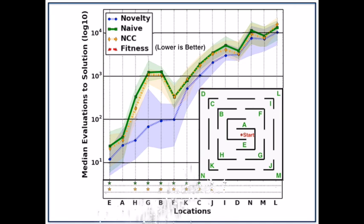As we saw previously, the stars at the bottom of the plot indicate significant difference and in this case show that novelty search is significantly faster than naive and NCC for a majority of the locations.